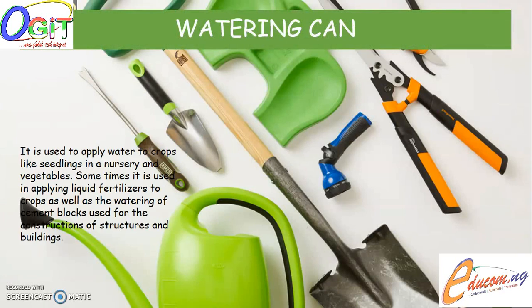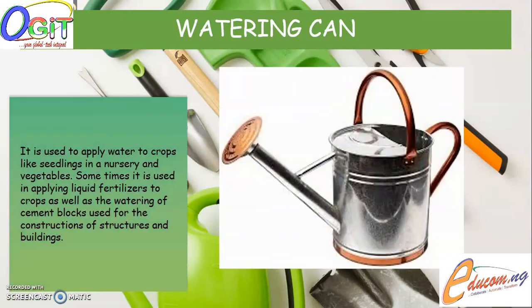I will be talking about the watering can. The watering can is used to apply water to crops like seedlings in the nursery and vegetables. Sometimes it is used in applying liquid fertilizers to crops, as well as the watering of cement blocks used for the construction of structures and buildings. The watering can is made up of galvanized iron, which prevents it from rusting. Some are also made of synthetic rubber. It is made up of a tank, a handle, and a spout. The spout is long with a perforated metal sheet over its mouth, referred to as the rose. In the case of the rubber type, the mouth is covered by a perforated rubber.